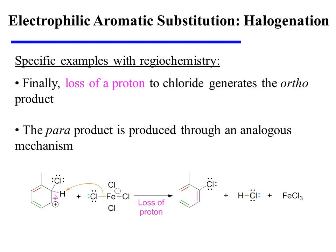The mechanism concludes with the loss of a proton from the sp3-hybridized ring carbon — it is always the sp3-hybridized carbon of the sigma complex that loses a proton in the last step. The proton is lost to a chloride from iron tetrachloride, yielding orthochlorotoluene, with HCl formed as a byproduct. Notice that the Lewis acid catalyst was regenerated in this last step.